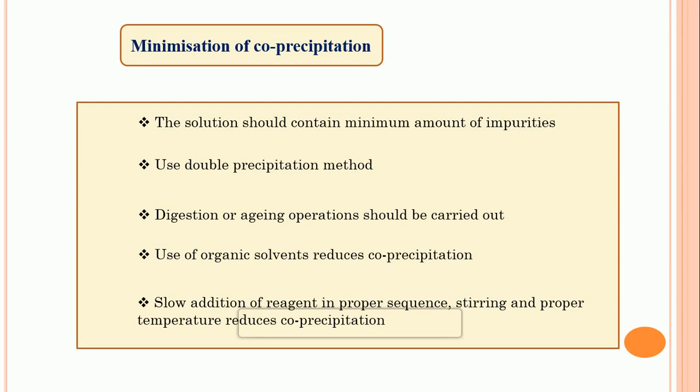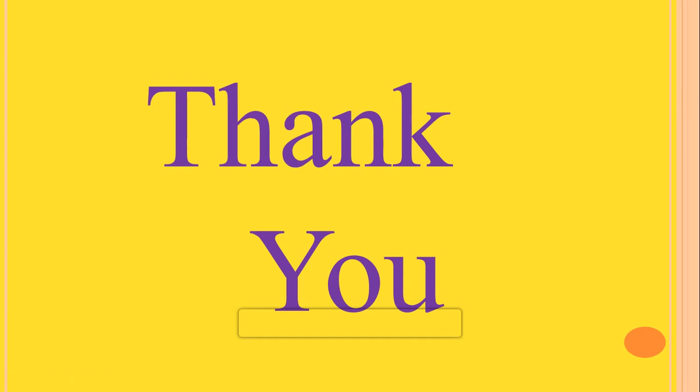In this video we discussed co-precipitation — contamination of the precipitate by substances which are soluble in the mother liquor. We discussed the two reasons for co-precipitation: surface adsorption and formation of occlusion or solid solution. Finally, we discussed minimization of co-precipitation. In the next video we will discuss post-precipitation and the difference between co-precipitation and post-precipitation. Thank you for watching. If you like this video, please subscribe to this channel.